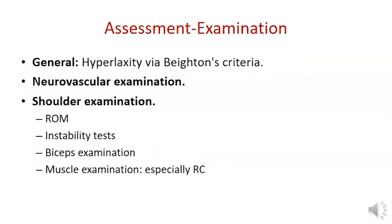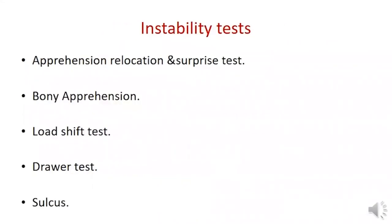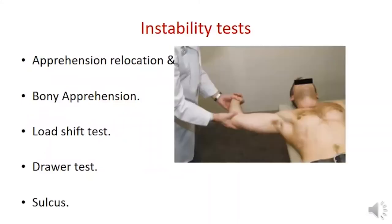Patient examination should begin with general examination for ligamentous hyperlaxity using Beighton's criteria, followed by neurovascular examination, then shoulder examination including range of motion compared to the normal side. Special instability tests include biceps examination for labral lesions and muscle examination for rotator cuff tears. The main special instability tests are the apprehension, relocation, and surprise tests.